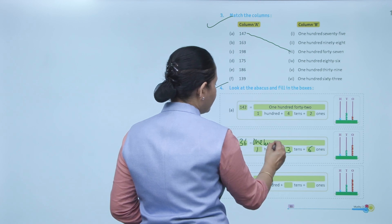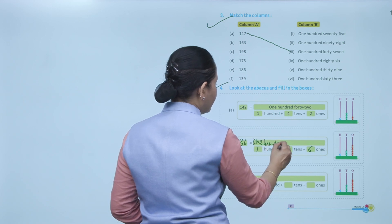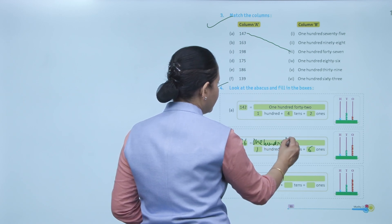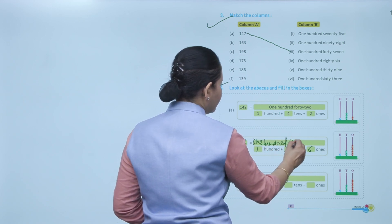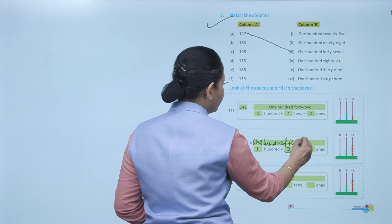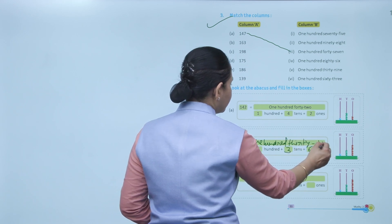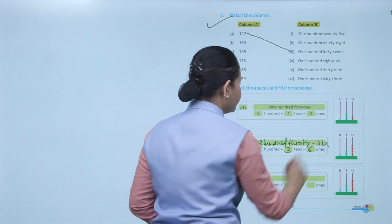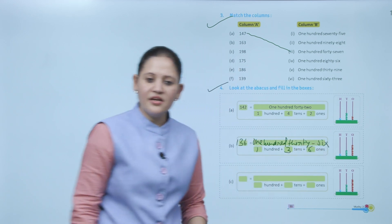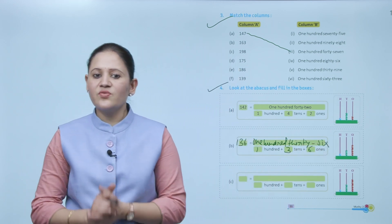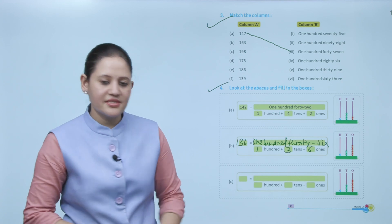So our number is 136. Write: one at hundreds, three at tens, six at ones — 136. Clear, like this we will write the numbers.